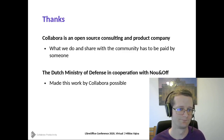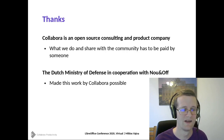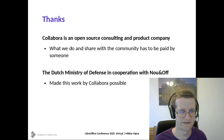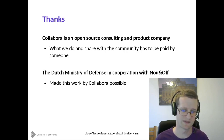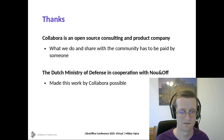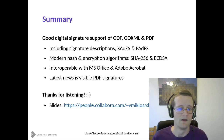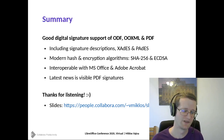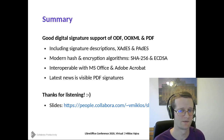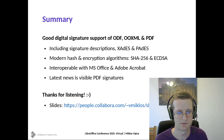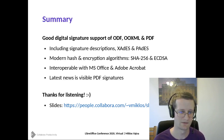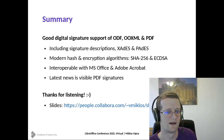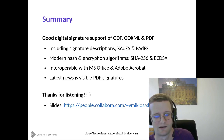Collabora is an open source company, so what we do and share with the community has to be paid by somebody. In this case, the Dutch Ministry of Defense, in cooperation with a small Dutch company, made this work by Collabora possible. The majority of the functionality presented in this talk was paid by them — a huge thanks to them. As a summary: compared to the original OpenOffice.org feature set, we now support XAdES and PAdES extensions, modern hashing algorithms, signing not only ODF but OOXML and PDF files, with good interoperability with Microsoft Office and Acrobat. And the news this year was visible PDF signatures. Thanks for listening.